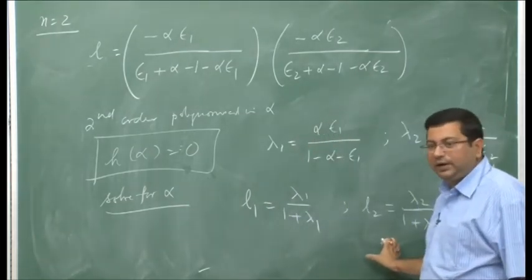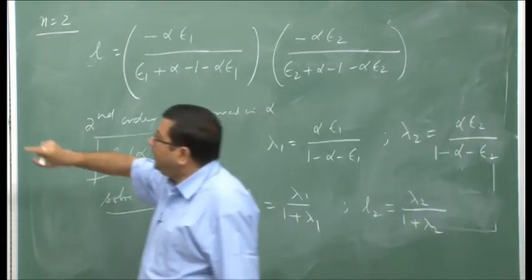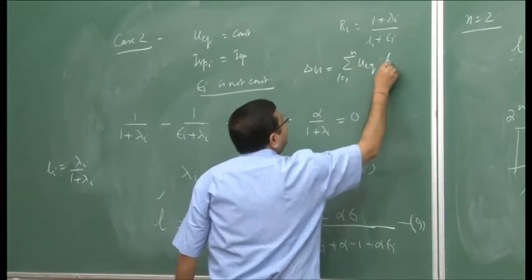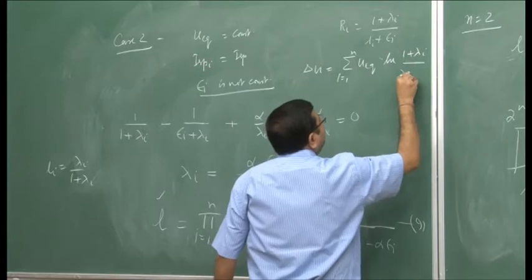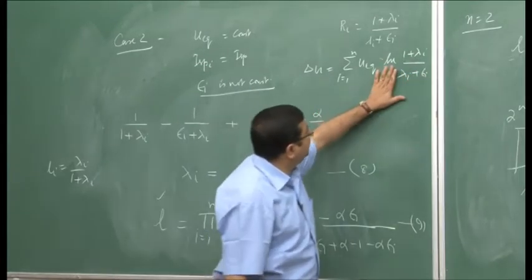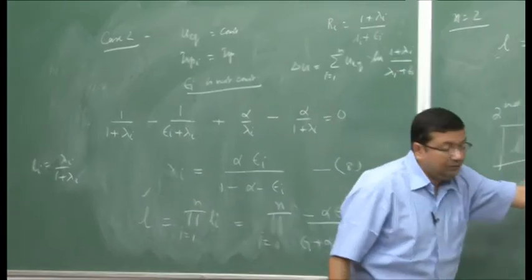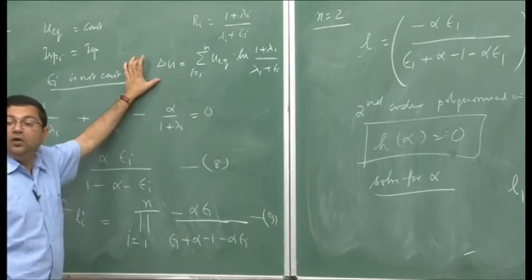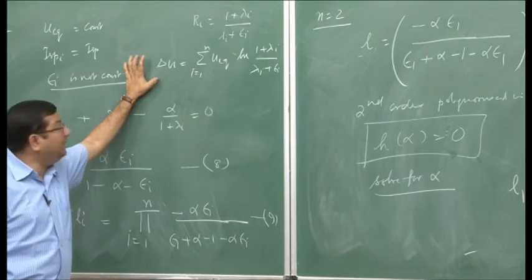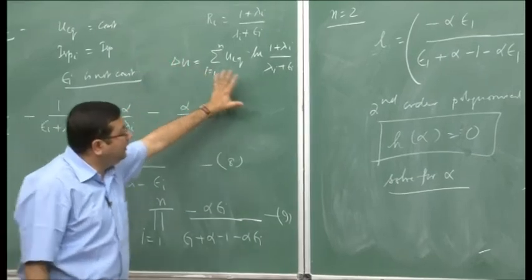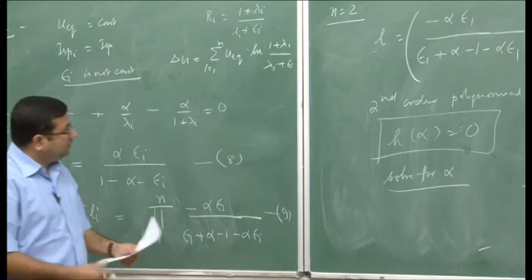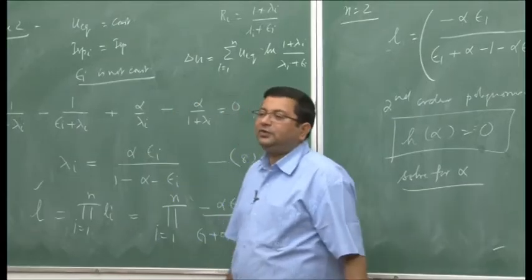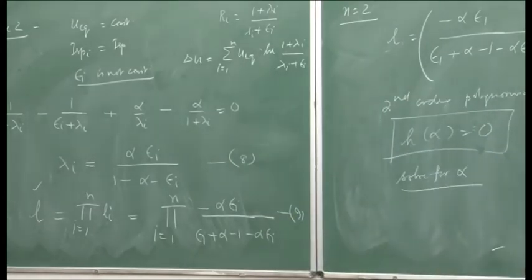Once we have lambda_1 and lambda_2, we go back to the delta-u expression: delta-u = sum from i=1 to n of u_equivalent · ln(1 + lambda_i / (lambda_i + epsilon_i)). With epsilon_i known and lambda_i calculated, and equivalent velocities known, we can estimate the overall velocity increment. For a 3-stage rocket we get a third-order polynomial, and for a 4-stage rocket a fourth-order polynomial. This was Case 2, where equivalent velocity is the same but structural coefficient varies.